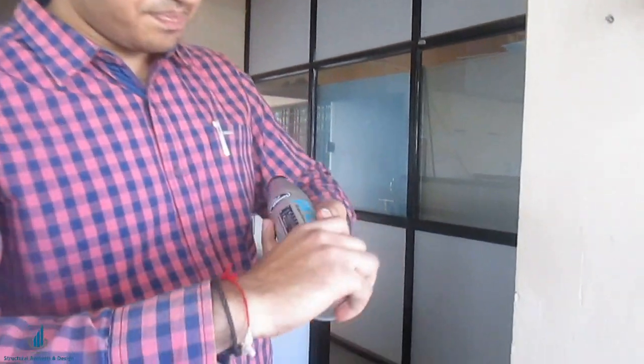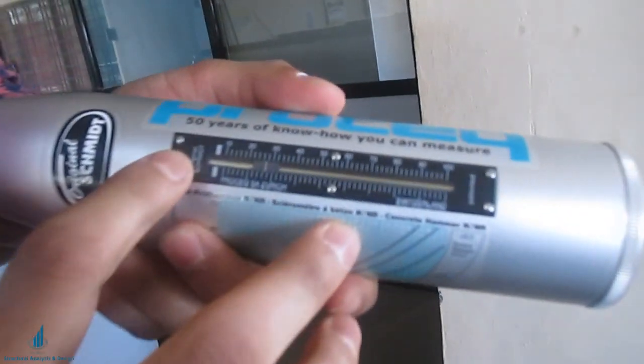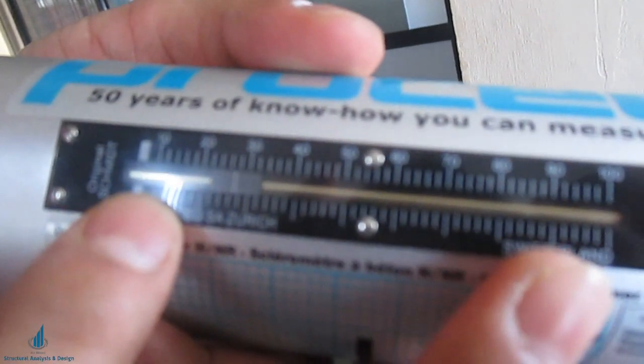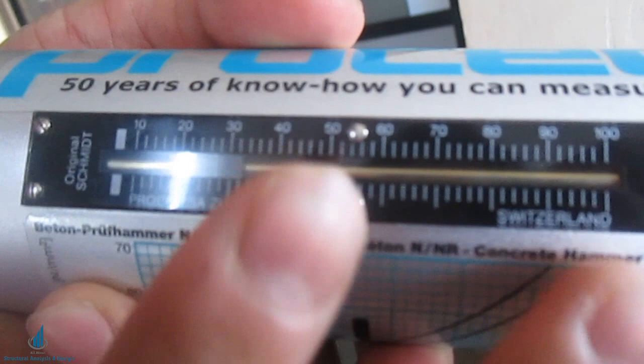I will show you the graduated scale here. This is graduated scale in which the rebound numbers is mentioned.